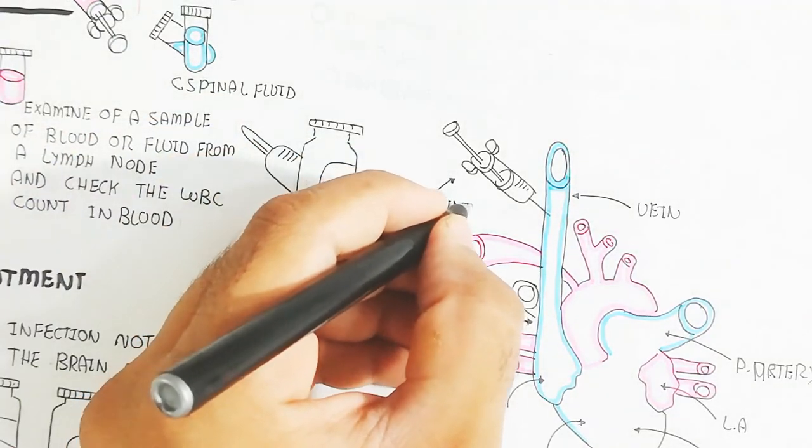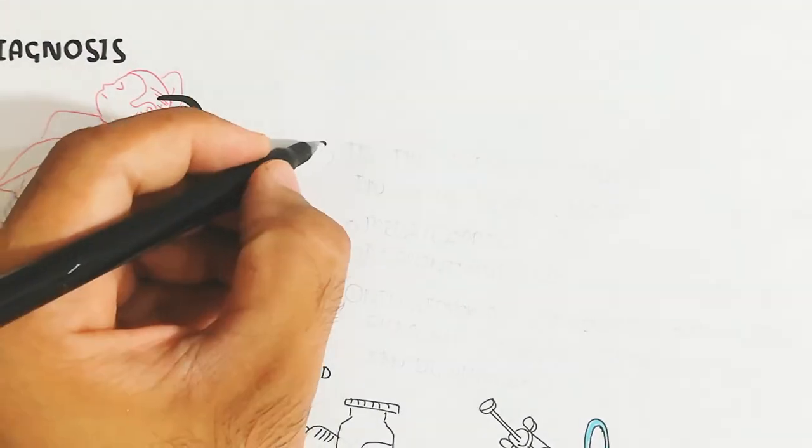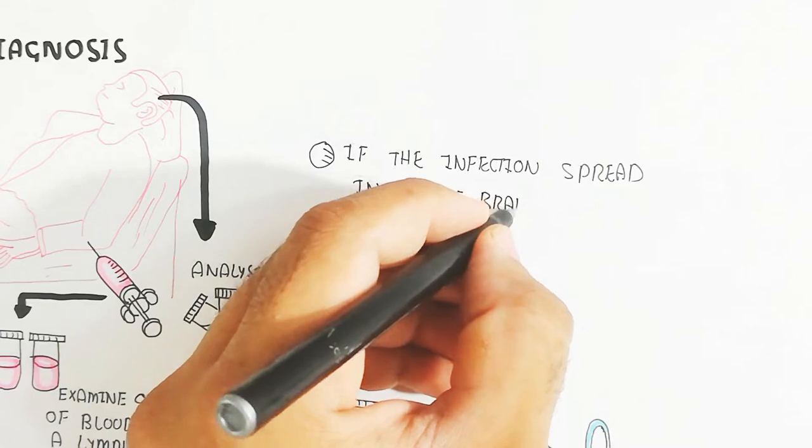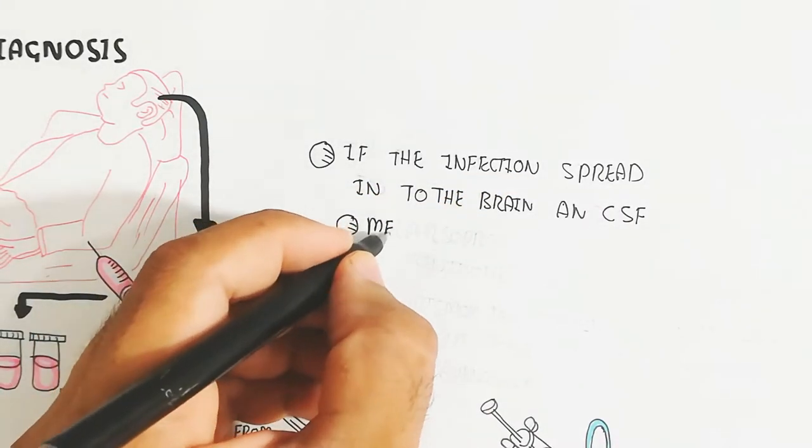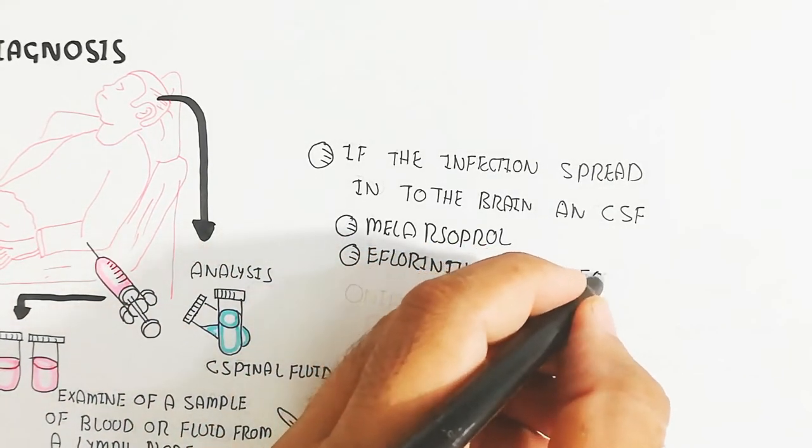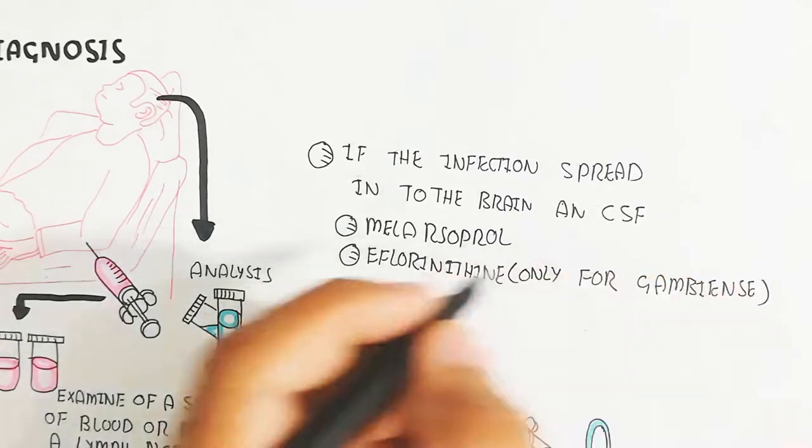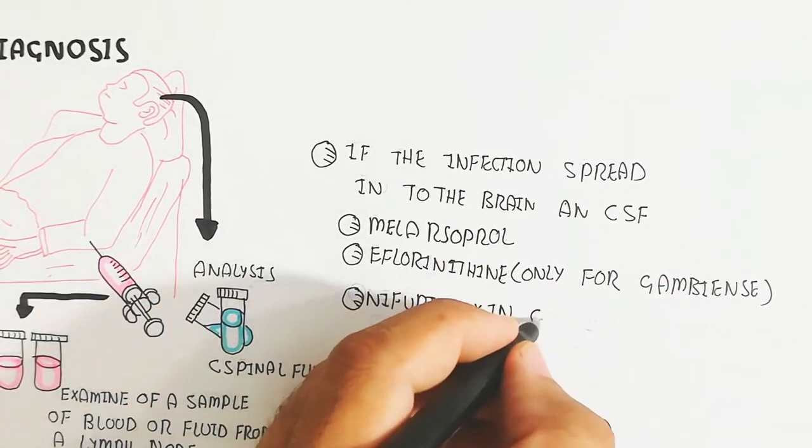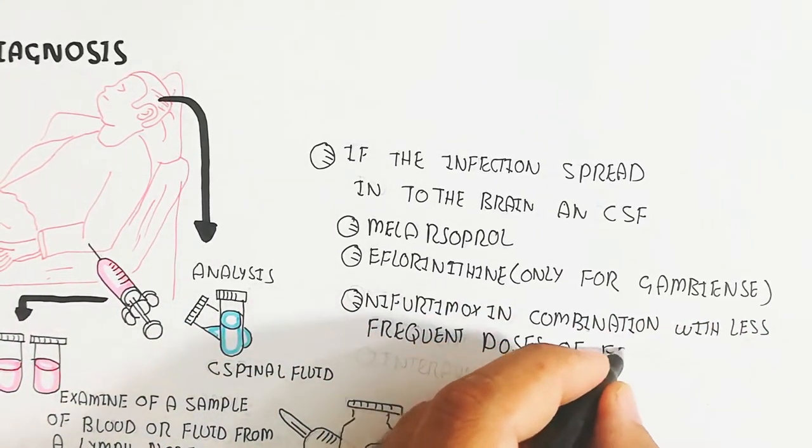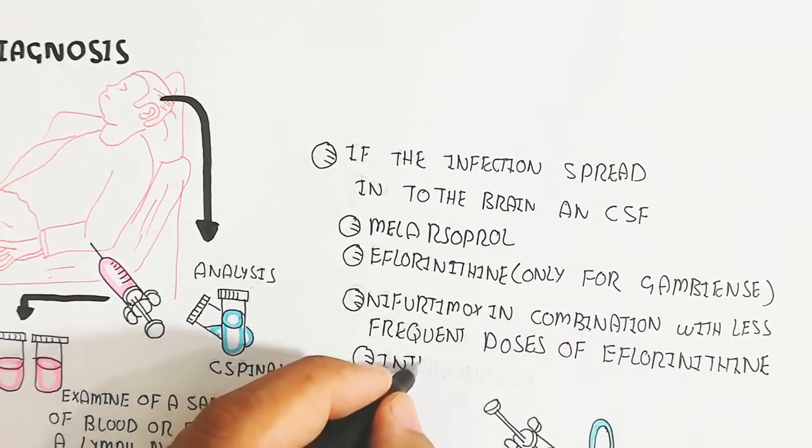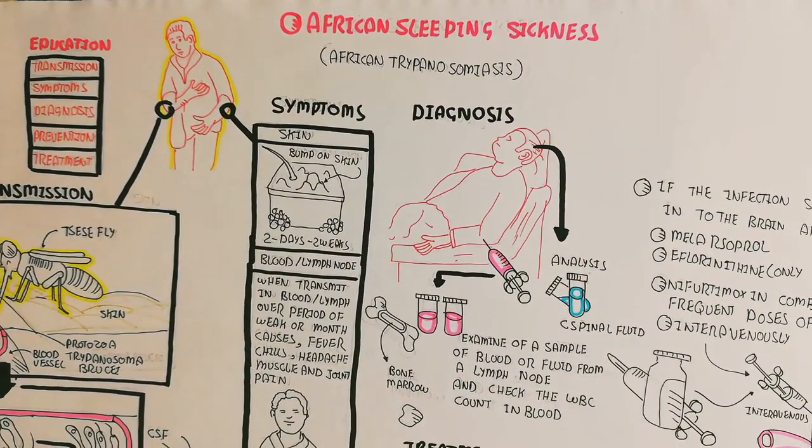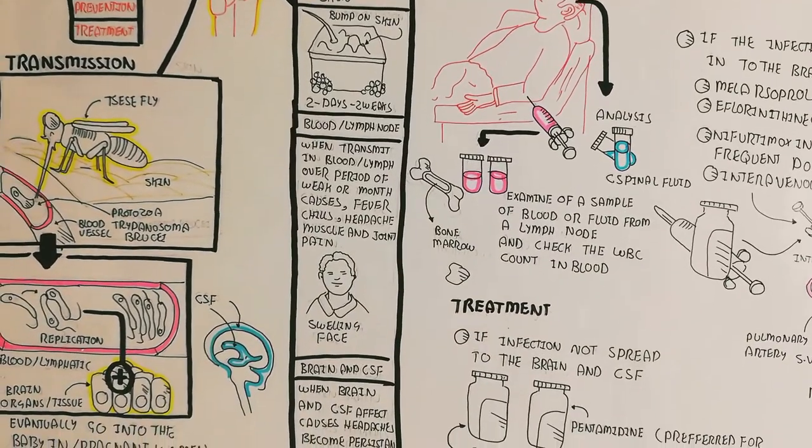If the infection spreads into the brain and cerebrospinal fluid, the infection is severe. Treatment includes melarsoprol and eflornithine, which is only for gambiense, and nifurtimox in combination with less frequent doses of eflornithine. These can be injected intravenously.